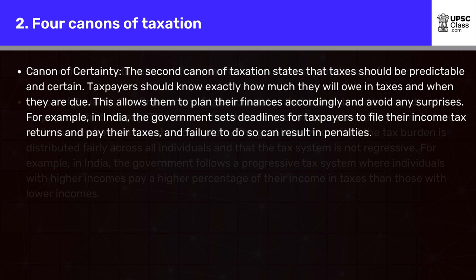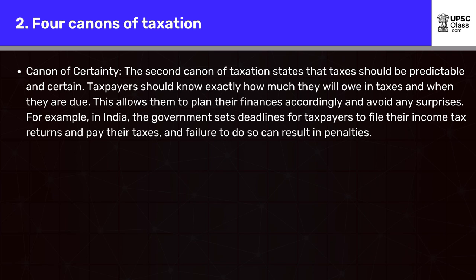Canon of Certainty. The second canon of taxation states that taxes should be predictable and certain. Taxpayers should know exactly how much they will owe in taxes and when they are due. This allows them to plan their finances accordingly and avoid any surprises.